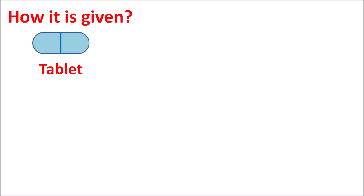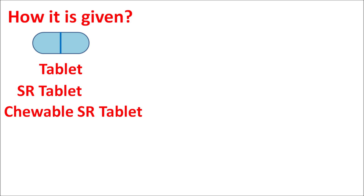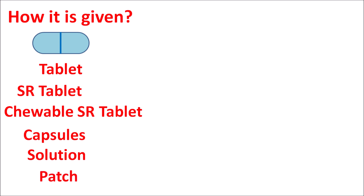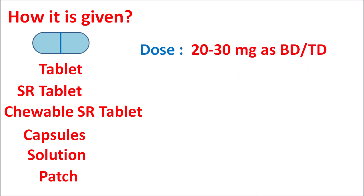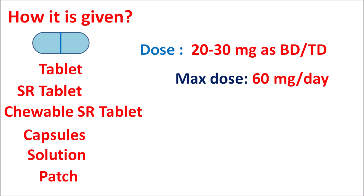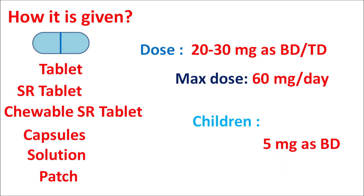This drug is available in different dosage forms such as tablets, SR tablets (sustained release tablets which release the drug slowly), chewable SR tablets, capsules, SR capsules, solution, and patches. The dose is individualized based on patient conditions, ranging from 20 to 30 mg given either twice or thrice daily. The maximum dose is 60 mg per day in divided doses. In children, the dose is started at 5 mg given twice daily.